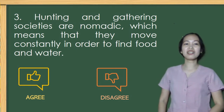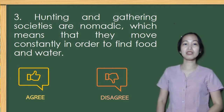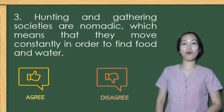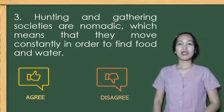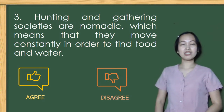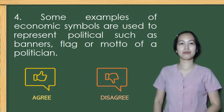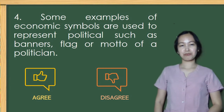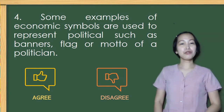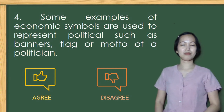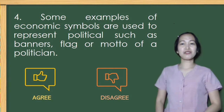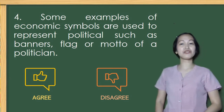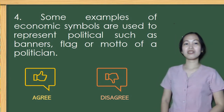Number 3: Hunting and gathering societies are nomadic, which means that they move constantly in order to find food and water. Agree is the correct answer — the majority of the members in this society spend their time looking for food. Number 4: Some examples of economic symbols are used to represent political power, such as banners, flag, or motto of a politician. The correct answer is disagree, because this statement pertains to the use of political symbols, not economic symbols.